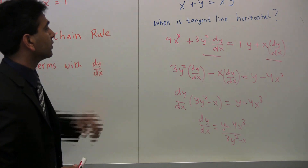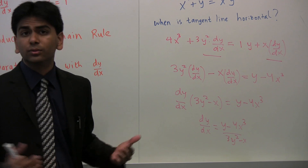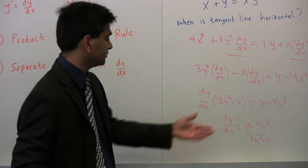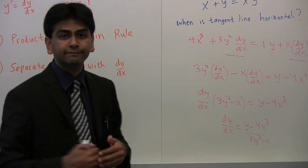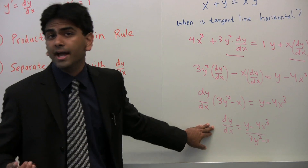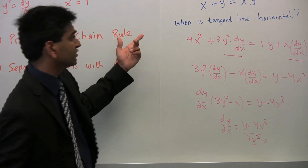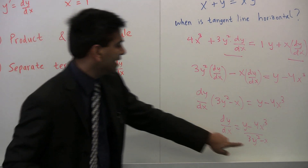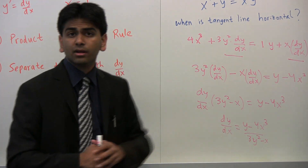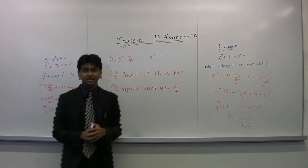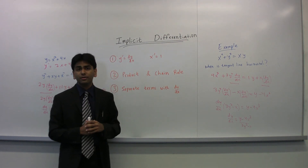Now, to find where the tangent line is horizontal, we set the numerator equal to zero: y minus 4x cubed equals 0. If the question instead asks when the tangent line is vertical, the derivative must be undefined, meaning the denominator equals zero — so the tangent line is vertical when x equals 3y squared. I hope implicit differentiation is a lot easier now, and I hope you enjoyed this video. Thank you.